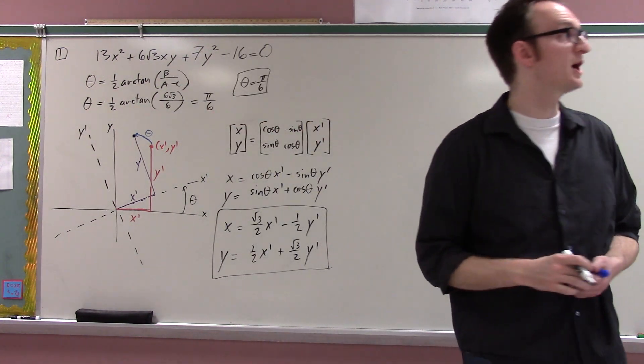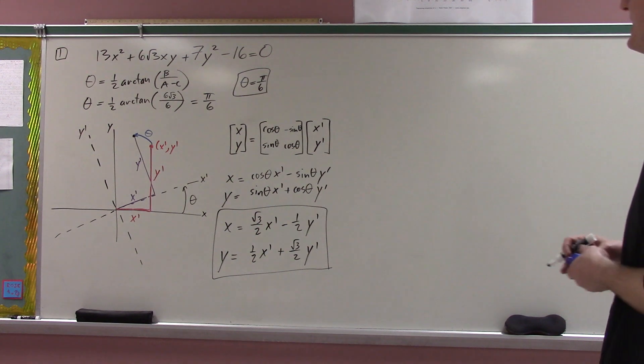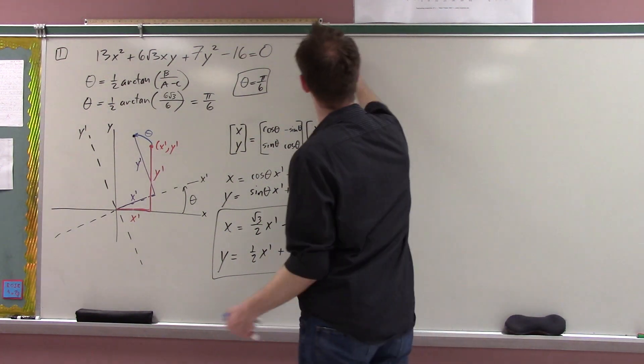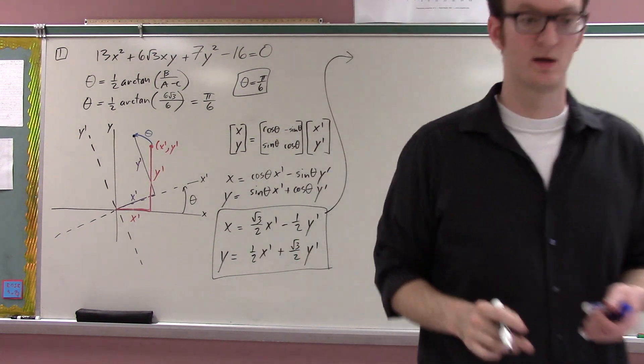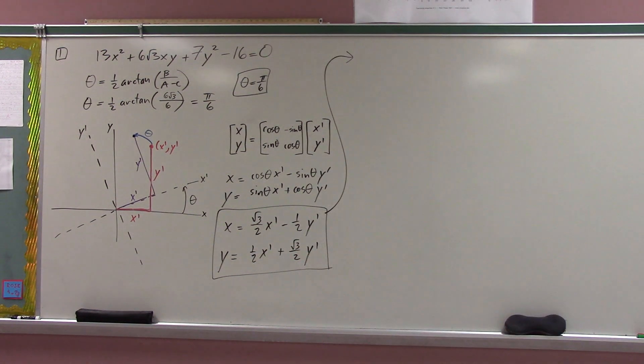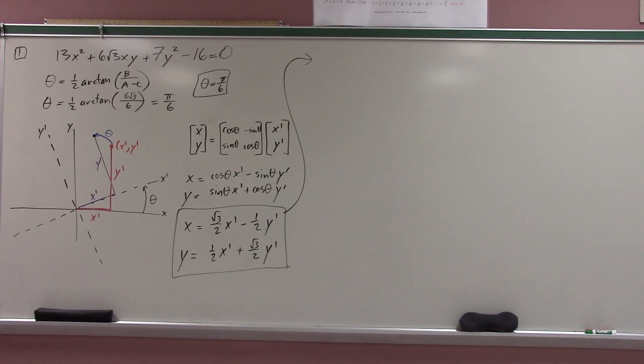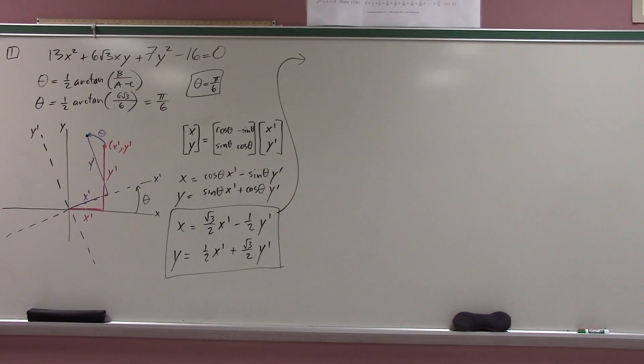and y is one-half x prime plus root 3 over 2 y prime. Yeah. So, that is, these are the formulas. And now, I just do it. I just take these formulas and figure out the equation of the new conic.